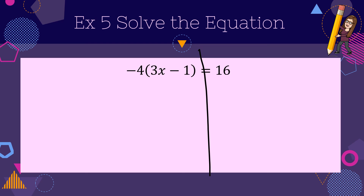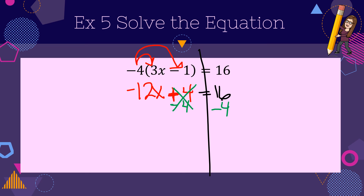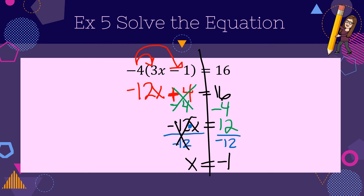Let's take a look at this one. Draw a line down the equal sign. First step: distribution. Negative 4 times positive 3 is negative 12x. Negative 4 times negative 1 is positive 4 — watch that positive. And the equals and 16 falls down. Step 2: undo any addition or subtraction — instead of a letter plus 4, we're going to minus 4. The negative 12x falls down, and on the right side I now have 12. My last step: instead of times negative 12, we're going to divide by negative 12. The x falls down, and 12 divided by negative 12 is negative 1.